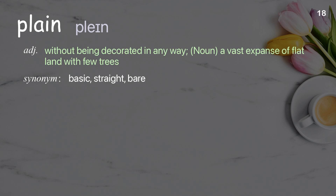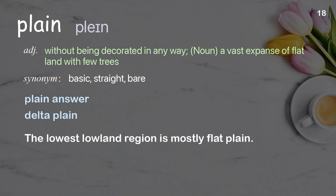Plain: Without being decorated in any way. Noun: A vast expanse of flat land with few trees. Examples: Plain answer. Delta Plain. The lowest lowland region is mostly flat plain.